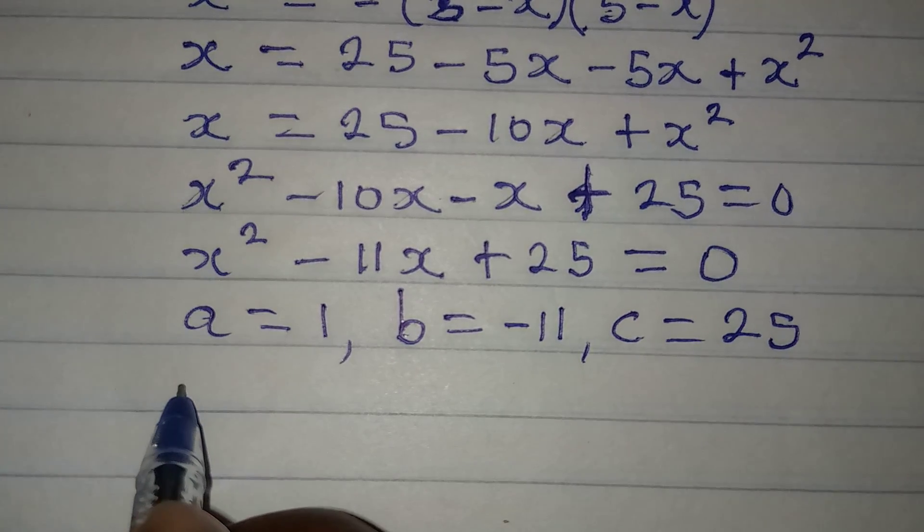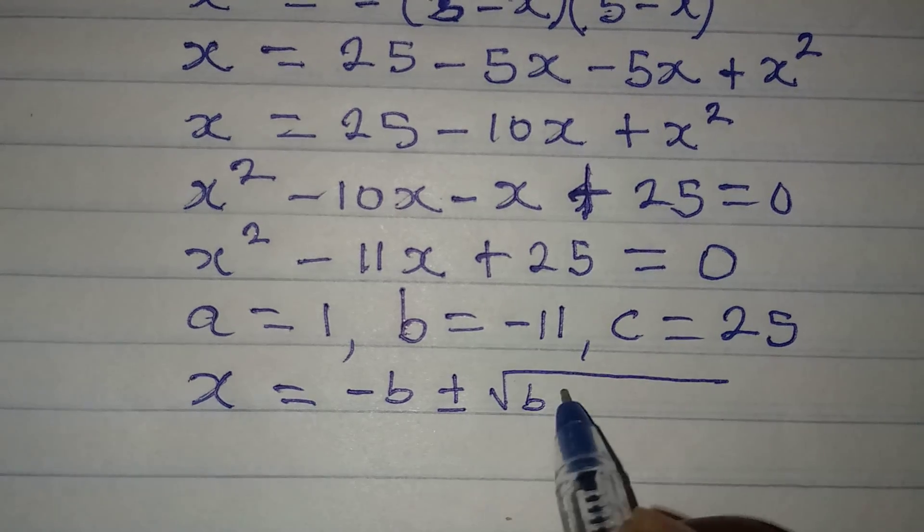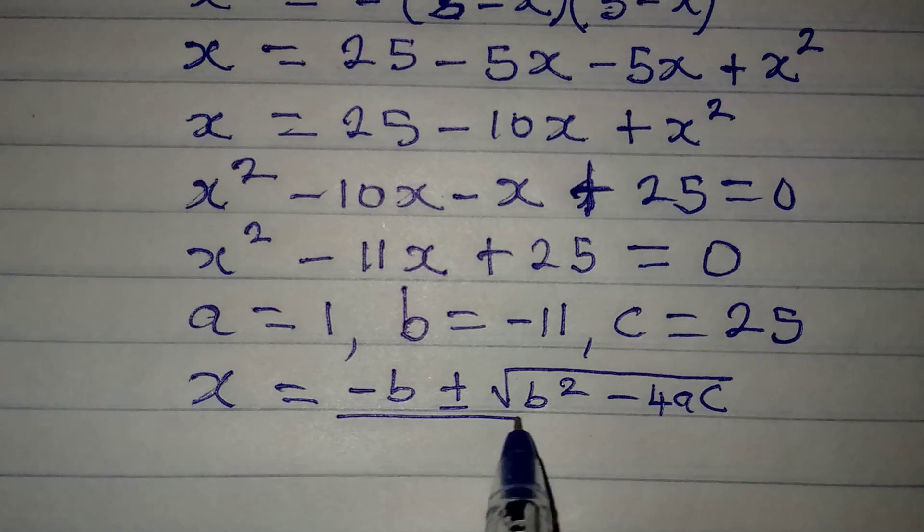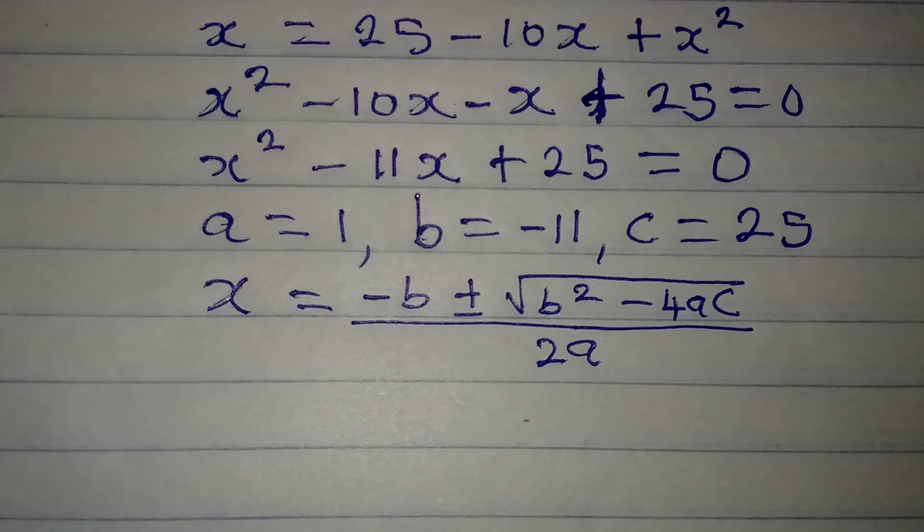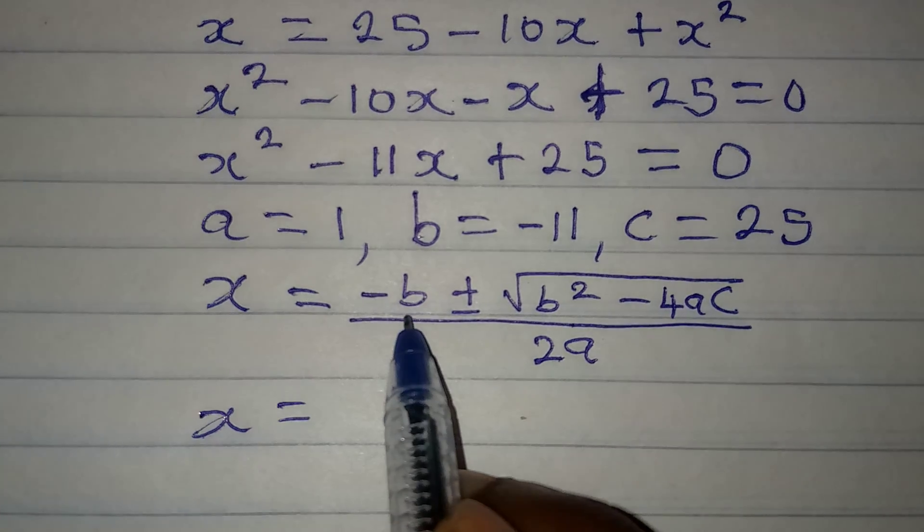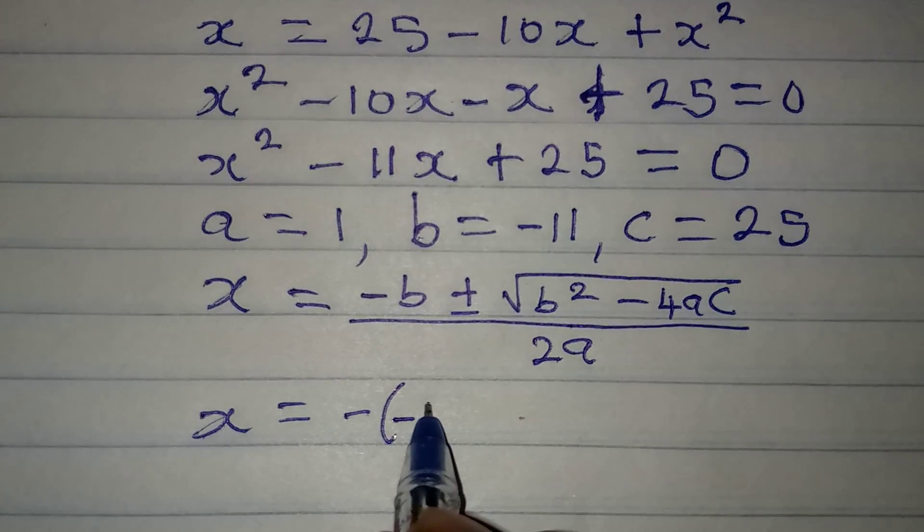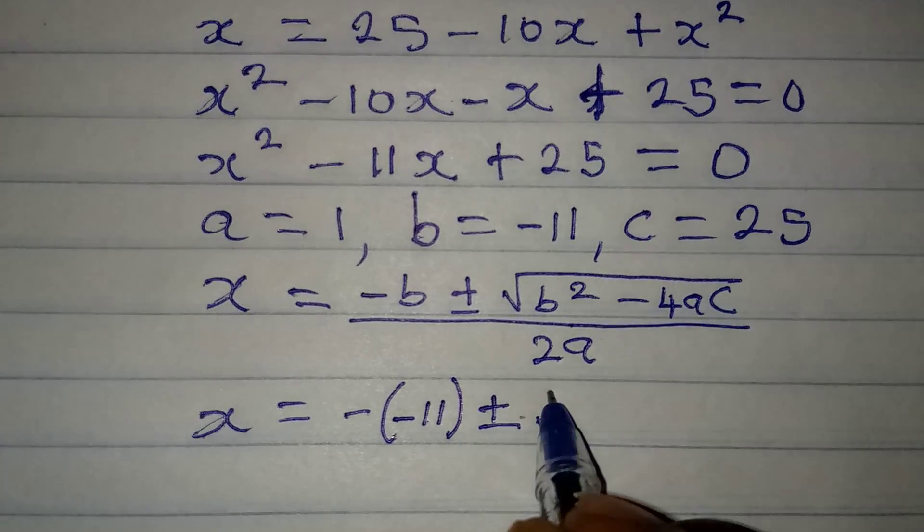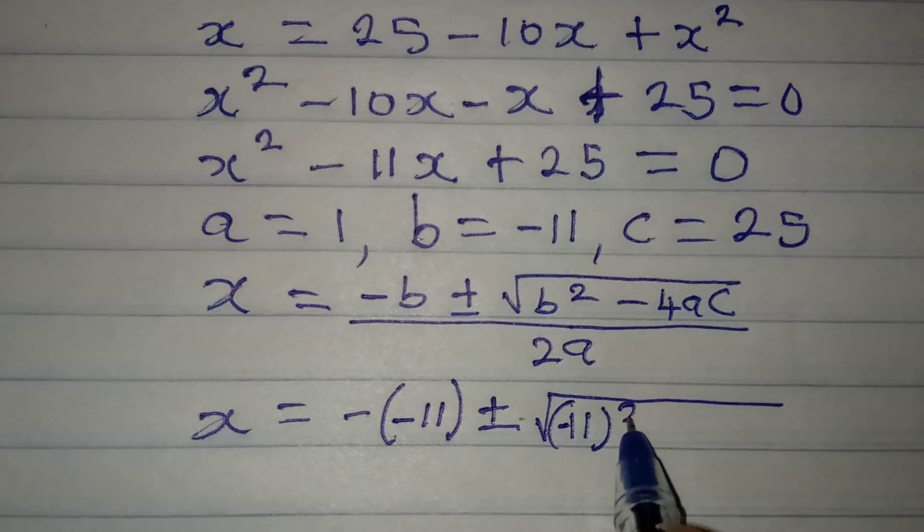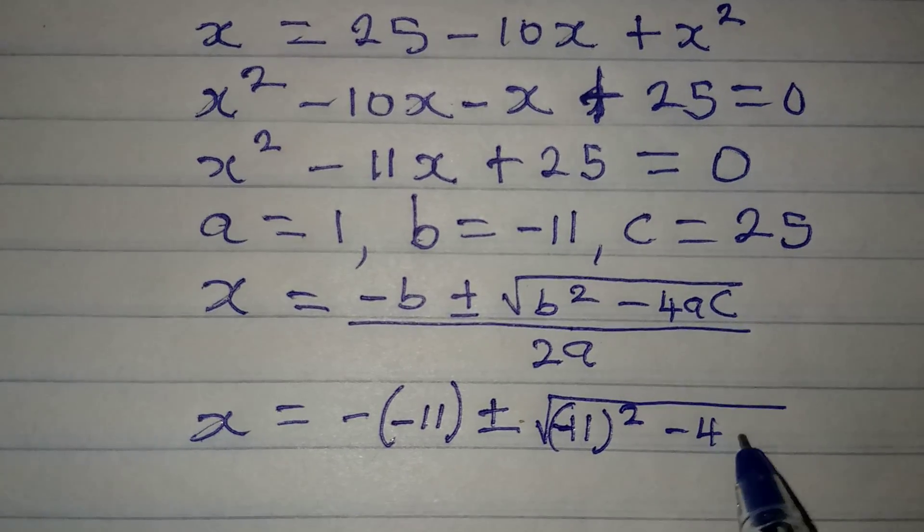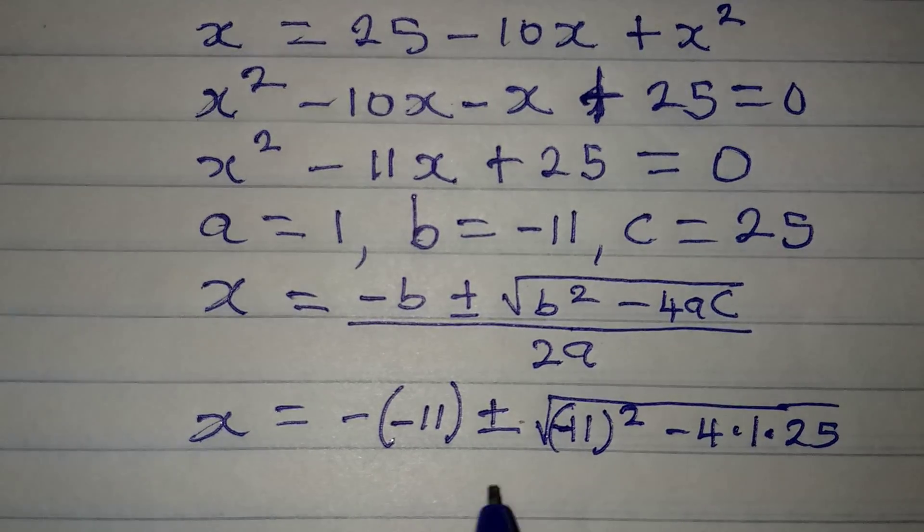Now our formula is x is equal to minus b plus or minus square root of b squared minus 4ac, and the whole of this will be over 2a. So what you will do now is to substitute into the formula. x will be, in place of minus b, I'll have minus then b, b itself is minus 11, so I have minus minus 11. Then plus or minus, here I'm going to have minus 11 squared, then minus 4 times 1 because a is 1, then times 25, and the whole of this will be divided by 2 times 1 because a is 1.